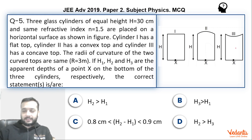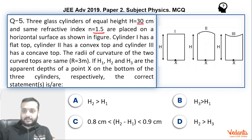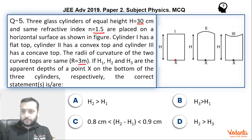Let's see what's happening here. There are three cylinders made up of glass of refractive index 1.5. The actual depth of all the cylinders is 30 centimeters. The top surface of the first cylinder is flat, whereas the top surface of the second cylinder is concave downwards. In the third case it's concave upwards. The radii of curvature of these two surfaces is 3 meters. We have to comment upon the apparent depth of point X in all three cases — H1, H2, H3 — called as the apparent depth in all three cases.